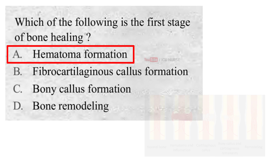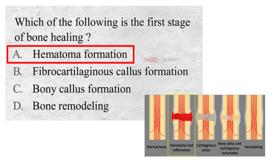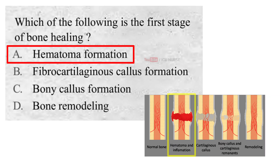Hematoma formation begins immediately following the fracture. The blood vessels supplying the bone and periosteum are ruptured during the fracture, causing a hematoma to form around the fracture site. The hematoma clots and forms the temporary frame for subsequent healing.